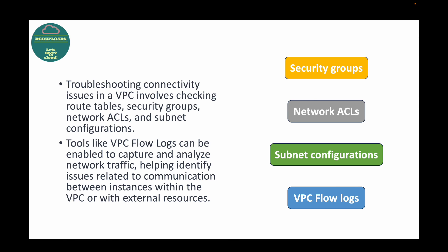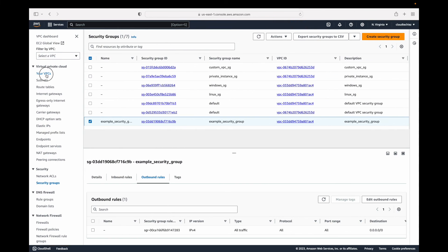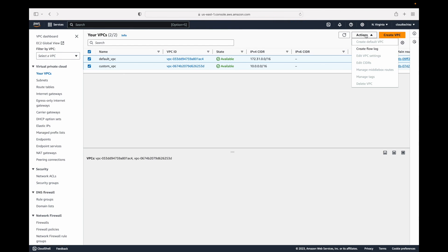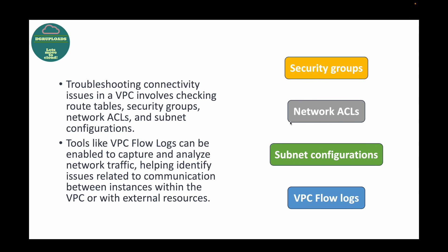In addition, you can make use of VPC Flow Logs, which enables you to capture and analyze your network traffic. When you go to your VPCs you have the option of creating a flow log — once you do this it will start capturing all of your inbound and outbound traffic. This helps you identify issues related to communication between your VPCs or with external resources.